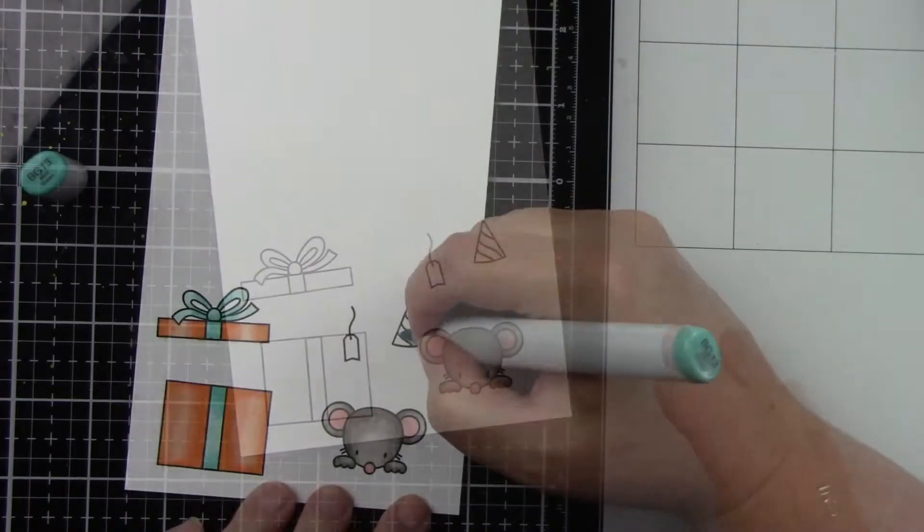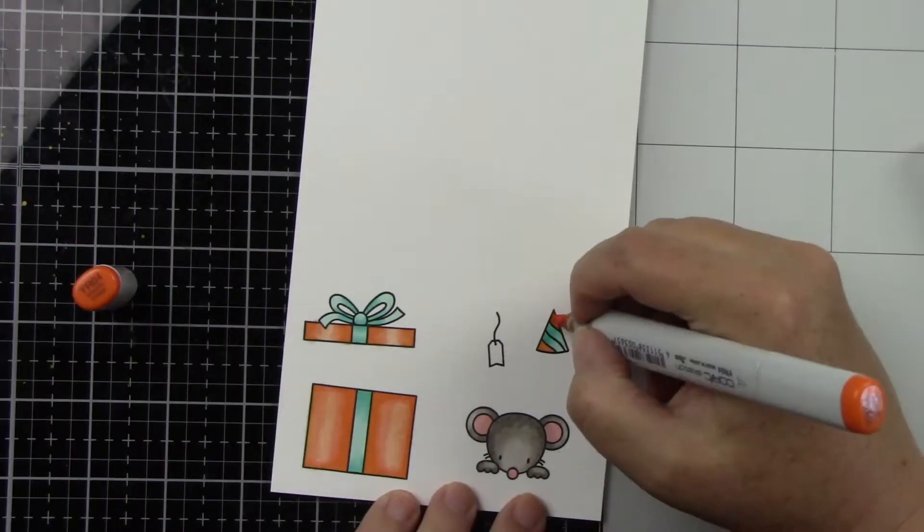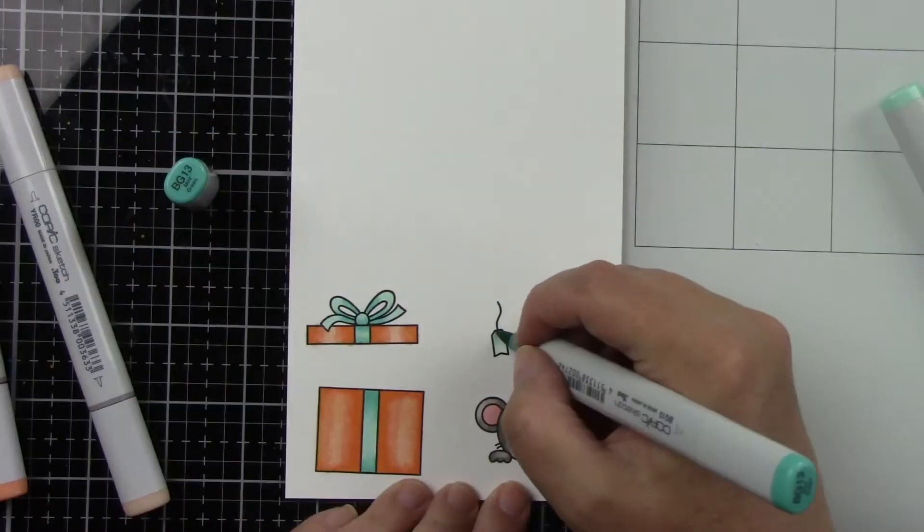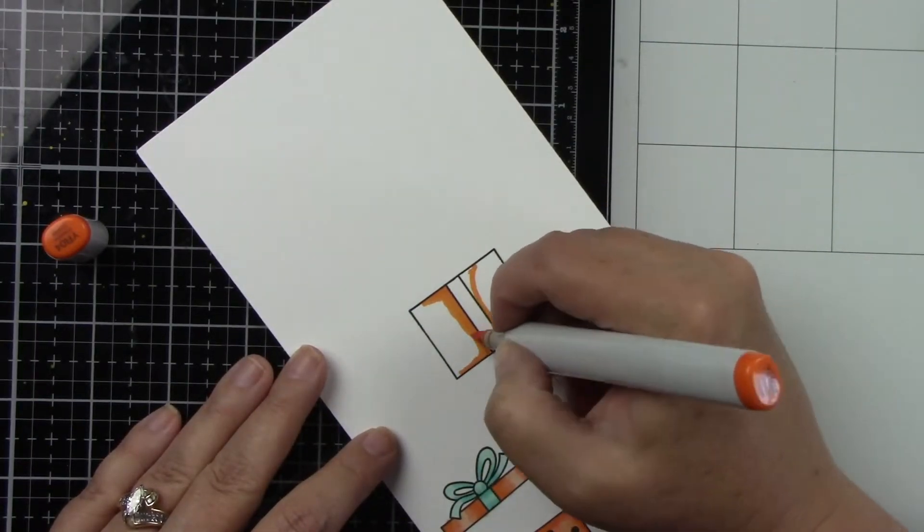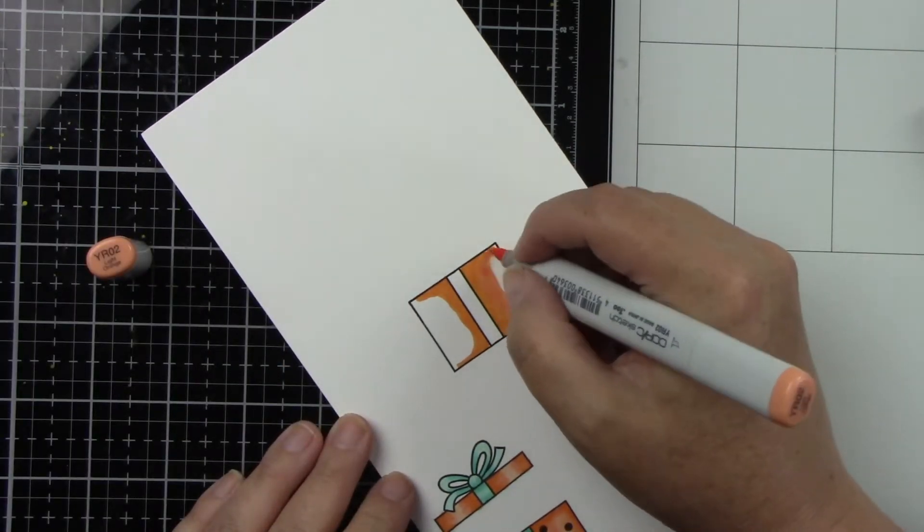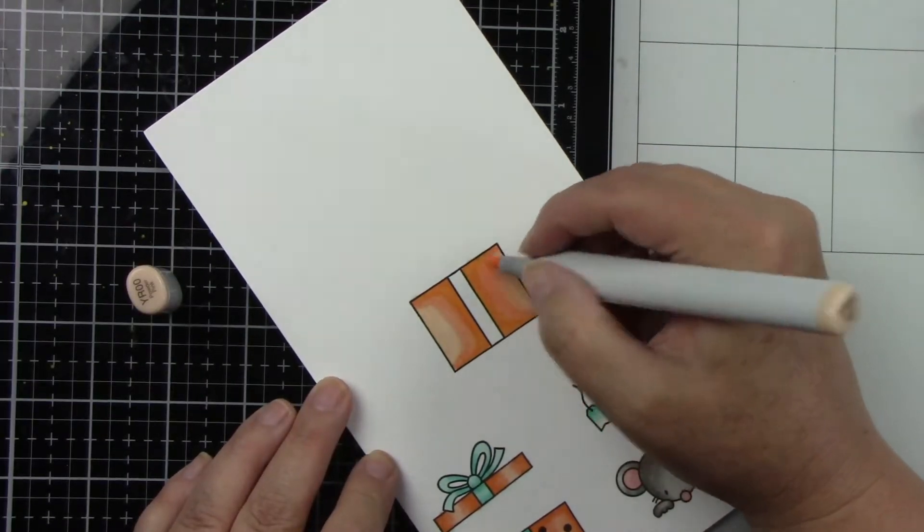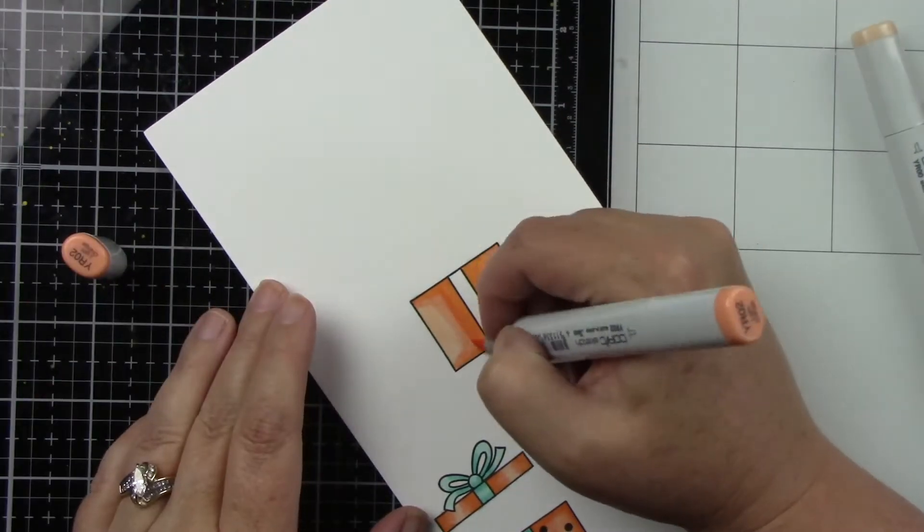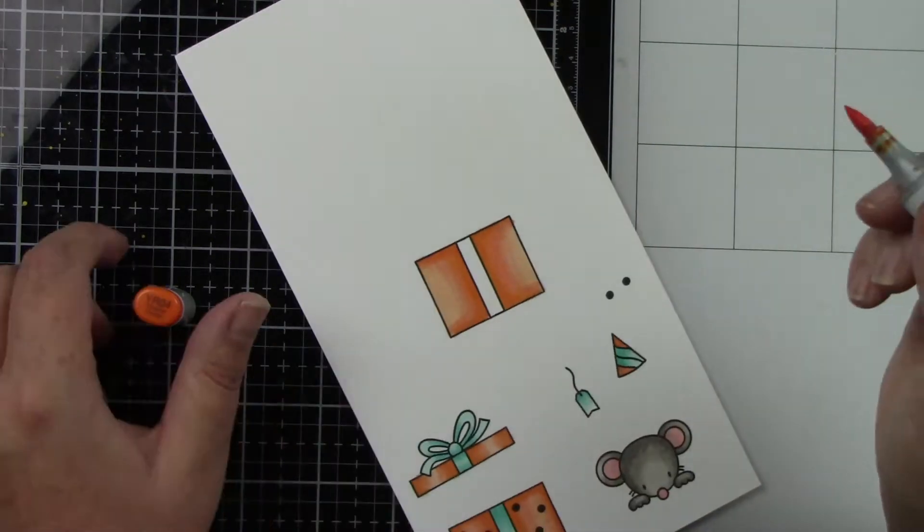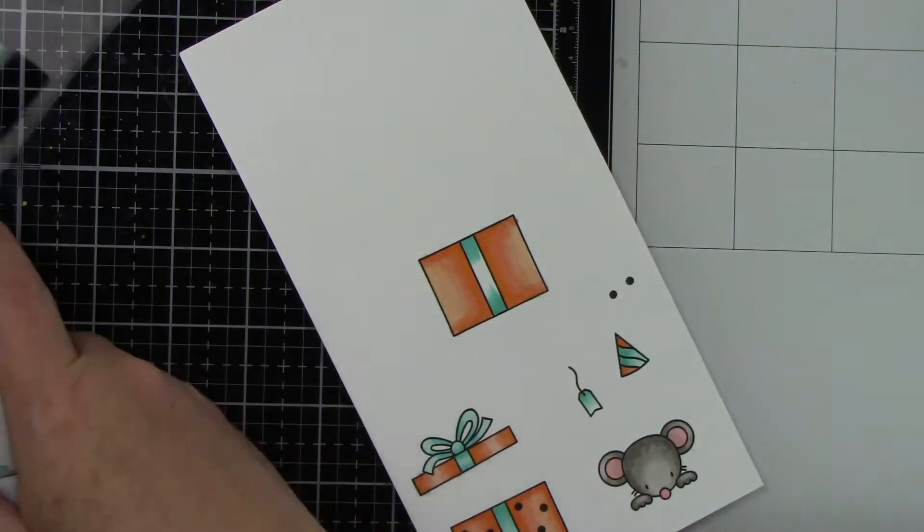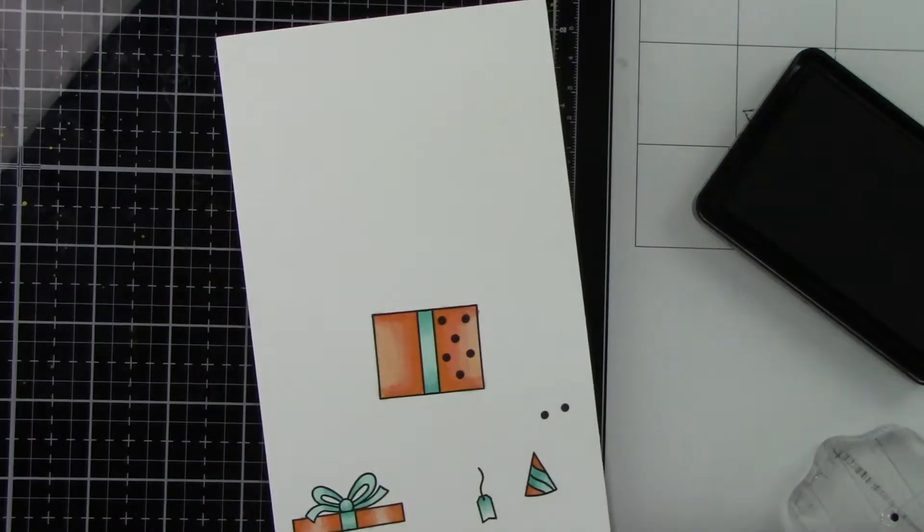I colored this cute little mouse with W1, 3, and 5 Copic markers, a nice warm gray, and R20 for his ears. Then I did a peachy orange and teal for the presents. I have my dark color, then blending out with my medium color, and my lightest color to finish blending. I think I did at least one more time to darken those shadow areas. And I just really like orange and teal.